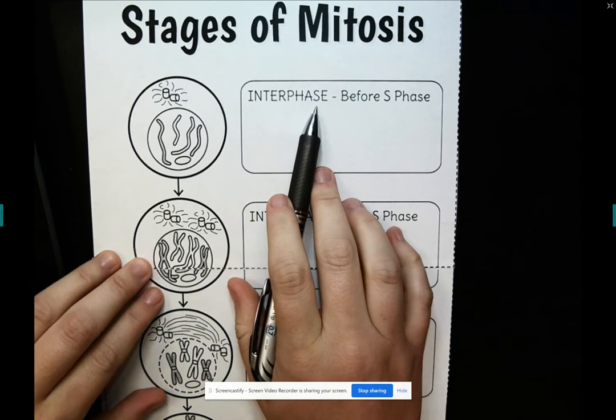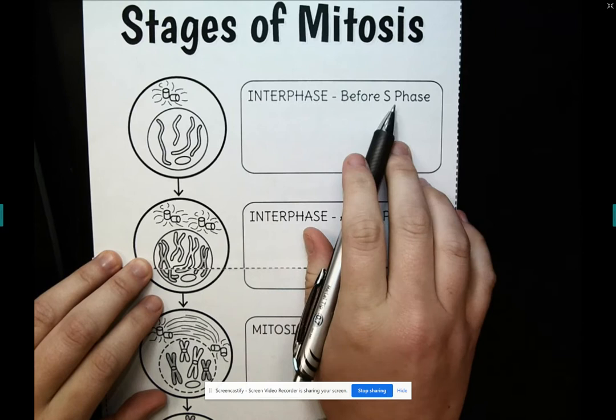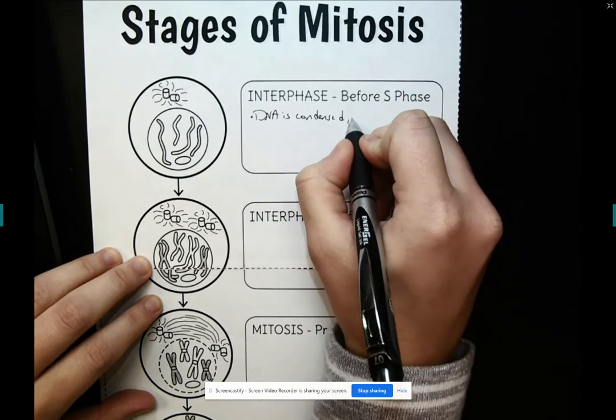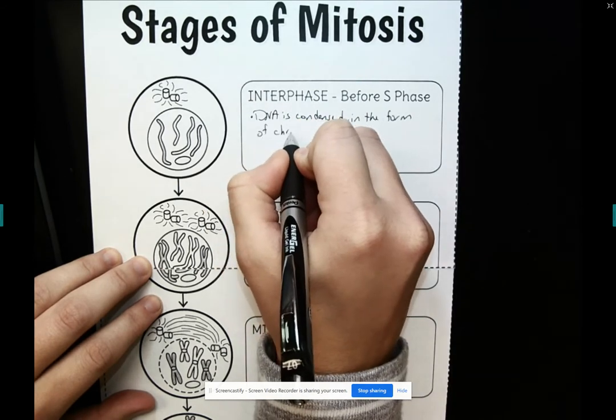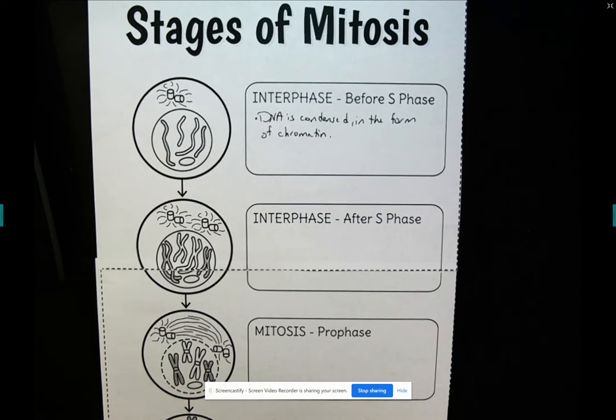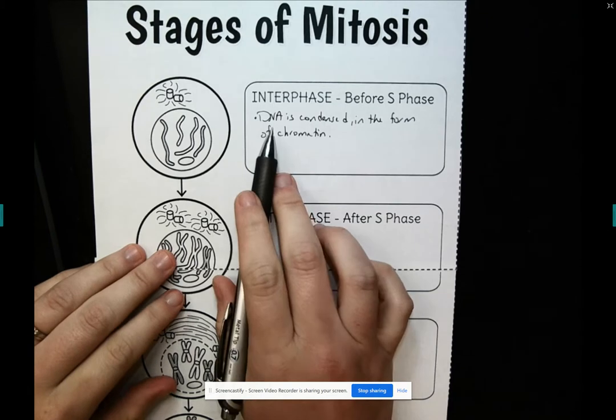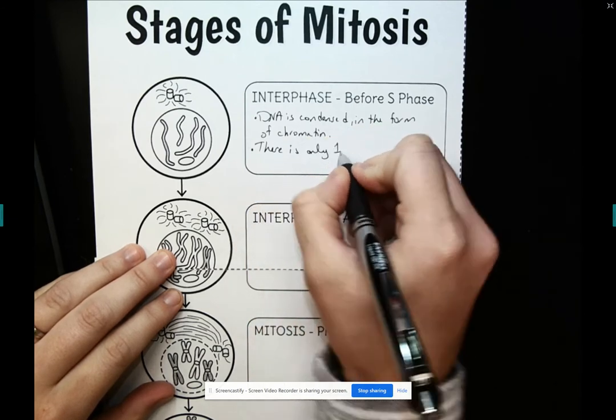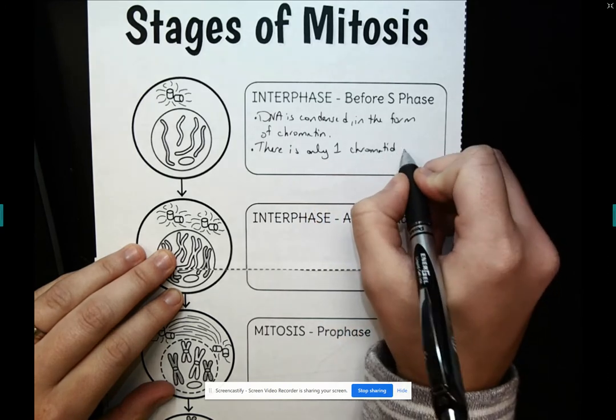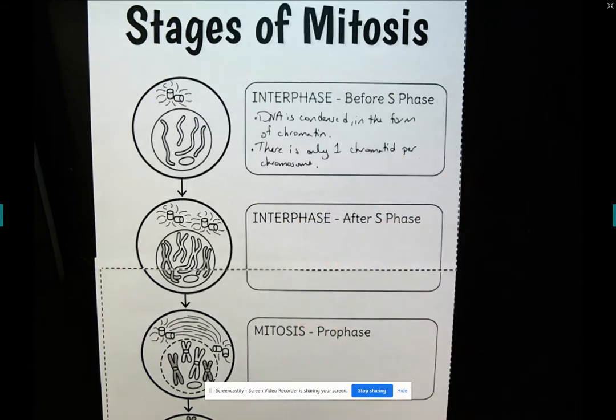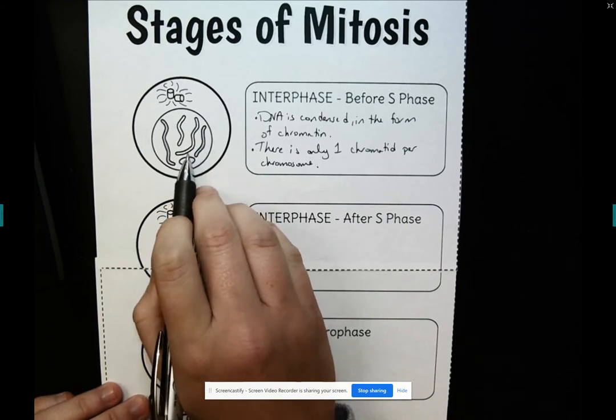So we're going to start with interphase. And so before S phase, the DNA is condensed in the form of chromatin. So we're talking about before S phase, so that would be G1, right? And we said G1 is when the cell is just hanging out, doing its regular everyday activities, and that is when the DNA is called chromatin. There is only one chromatid per chromosome, right? Because DNA replication has not happened yet. Before S phase, there's only one chromatid per chromosome.